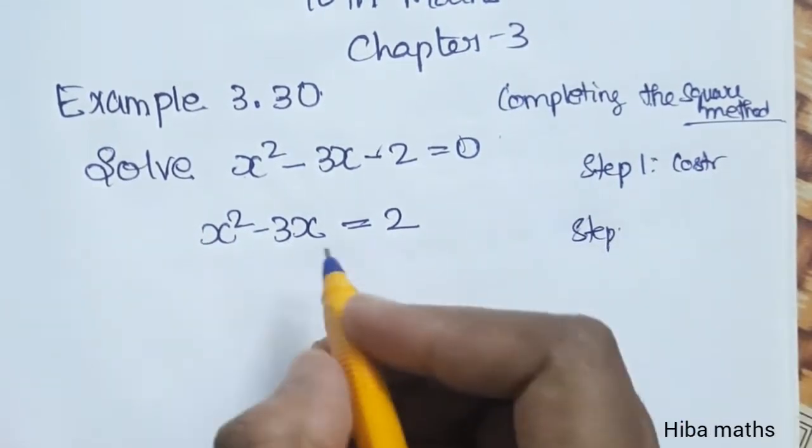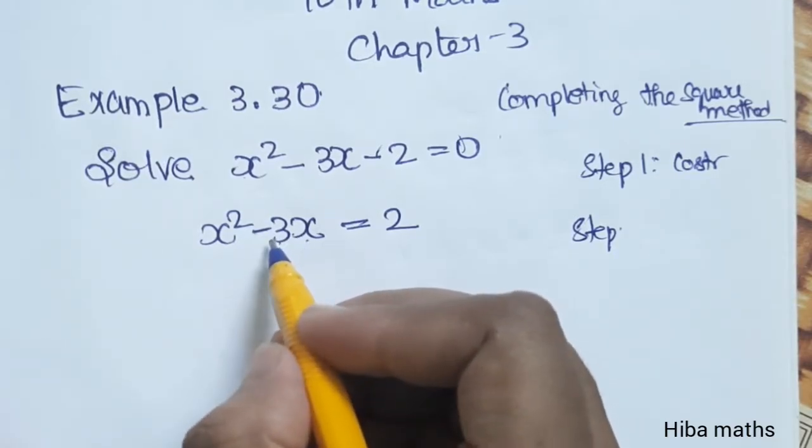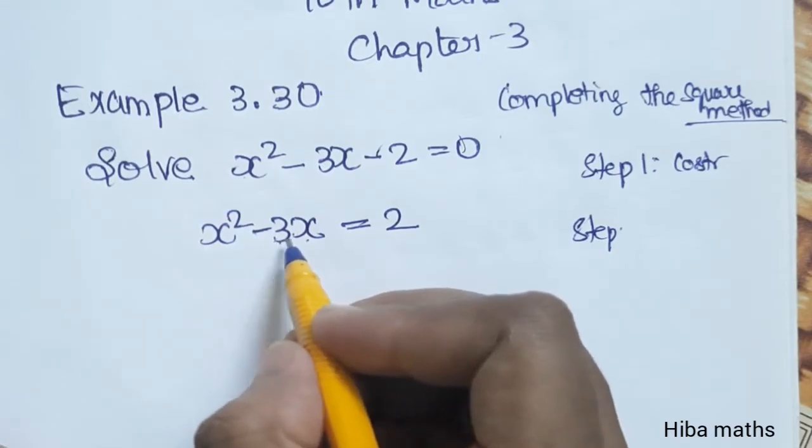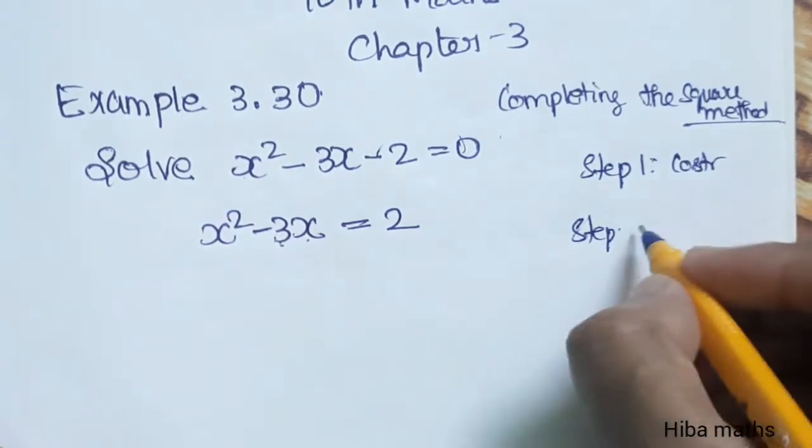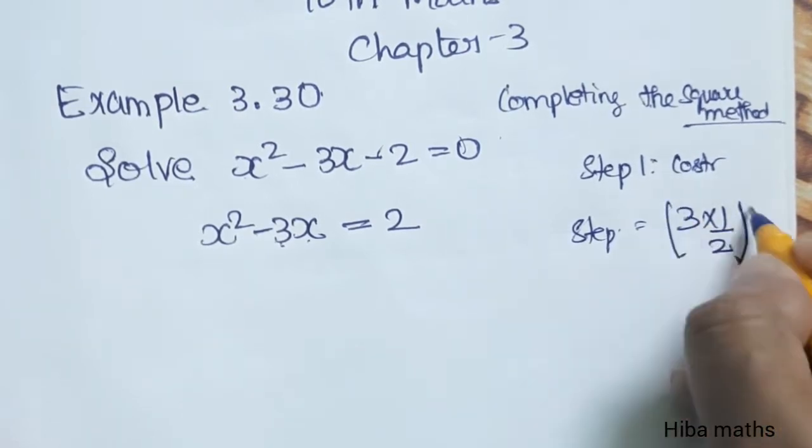The second step is taking the coefficient of x, which is 3. So 3 multiplied by 1/2 and then square.